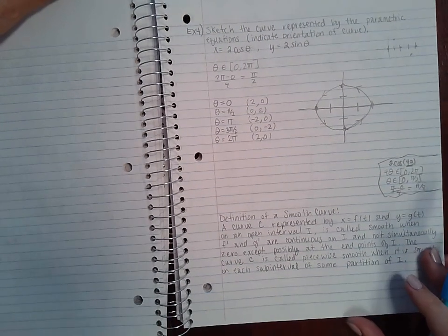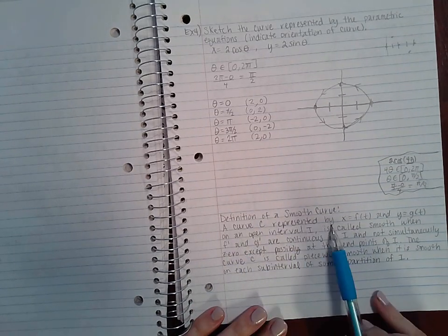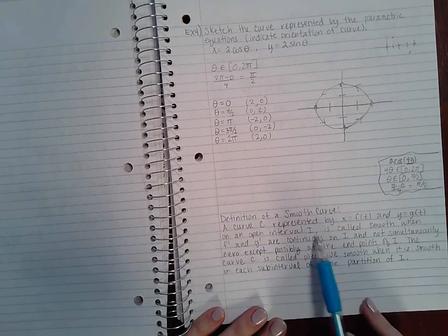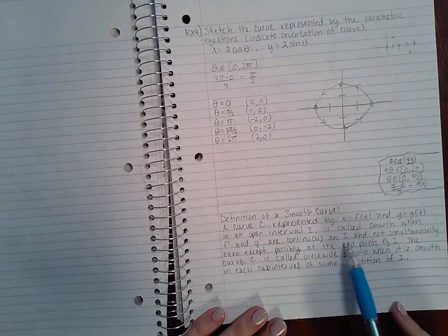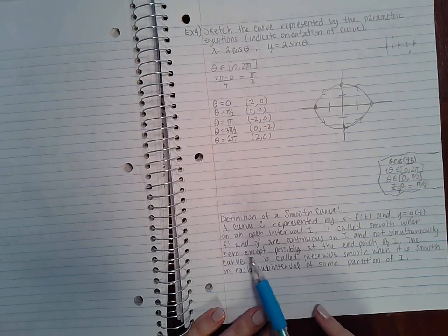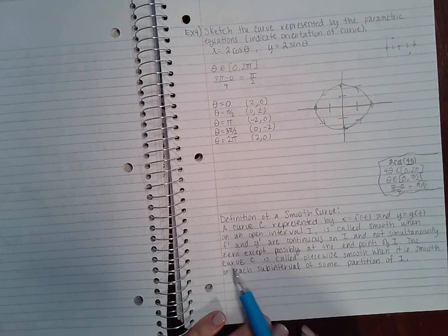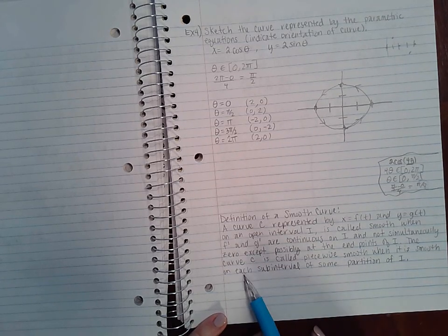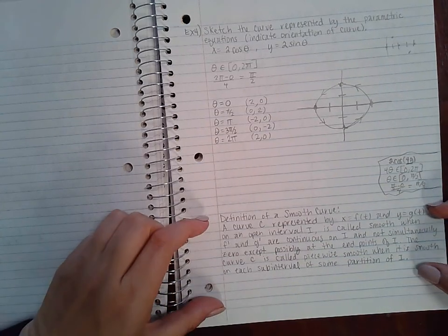Now down here we have the definition of a smooth curve. A curve C represented by x = f(t) and y = g(t) on an open interval I is called smooth when f' and g' are continuous on I and not simultaneously zero, except possibly at the endpoints of I. The curve C is called piecewise smooth when it is smooth on each subinterval of some partition of I.